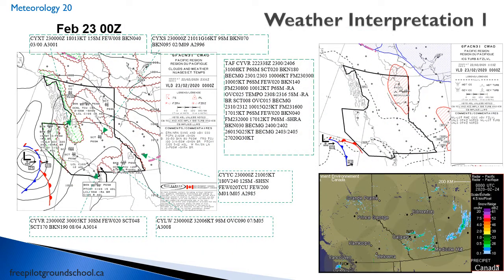Let's begin by looking at the GFA from the 23rd at midnight Zulu. The clouds and weather are on the left. On the right is the icing, turbulence, and freezing level GFA taken for the same validity period, but issued 12 hours earlier on the 22nd at 1200Z. This is British Columbia — I put arrows in where the actual weather stations are, should you not know where, say, Terrace or Prince George is. On the left side we see this frontal depression — here's a low — moving to the east at 25 knots, with an occlusion or trough.